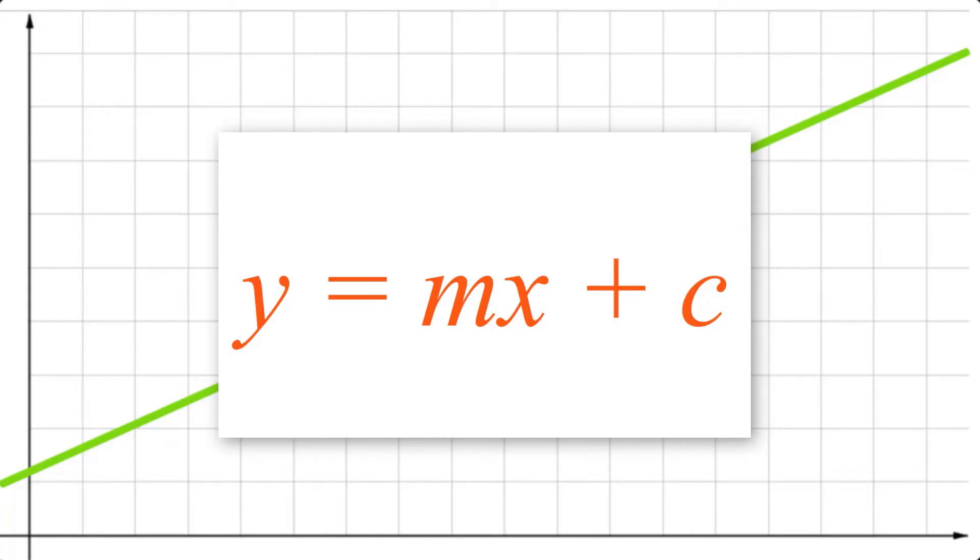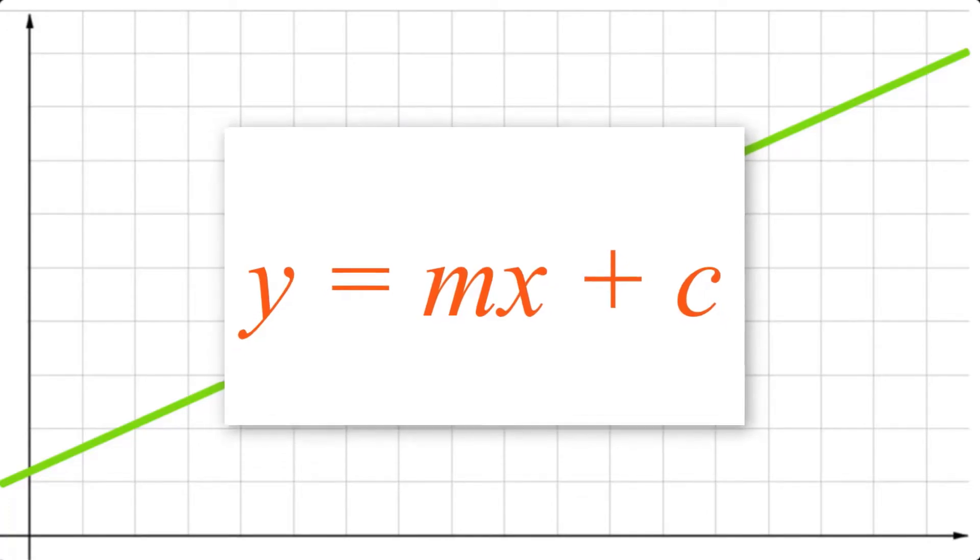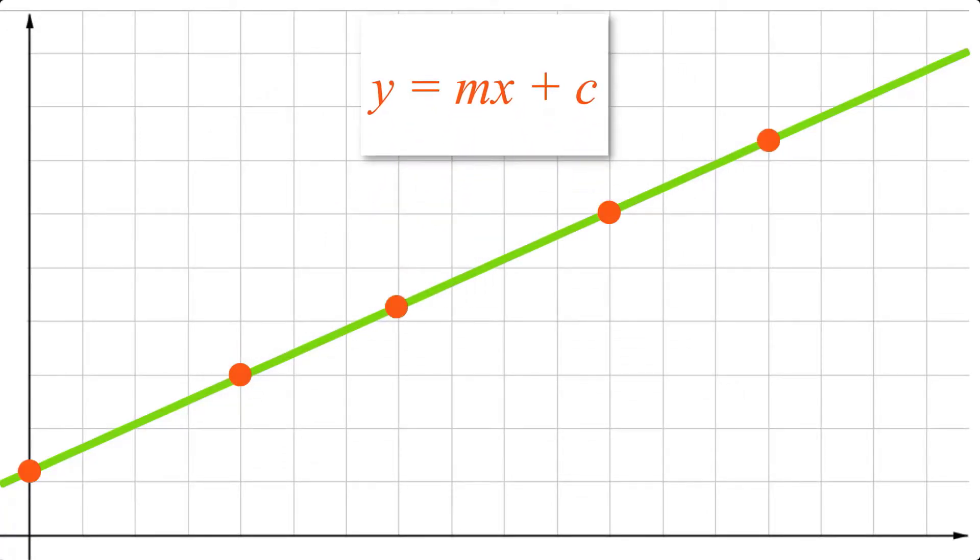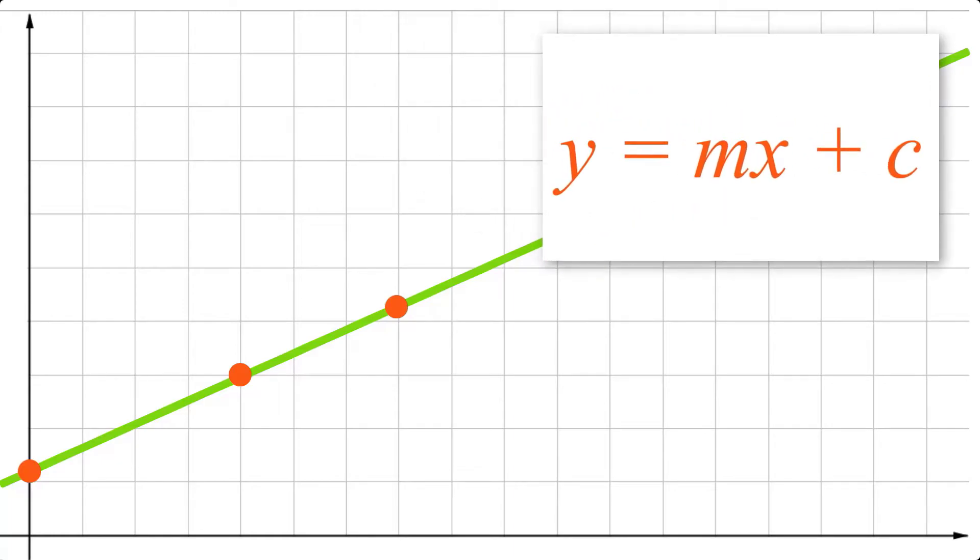All straight lines look the same way. They're in the form y equals mx plus c. We can use this equation to draw the line and find any of its points. So let's talk a little bit about what each part of the equation means. First off, we have y and x. They make up the coordinates of the points on the line and they change depending on wherever the point is.